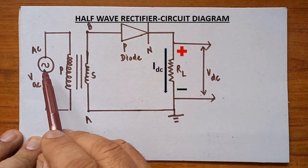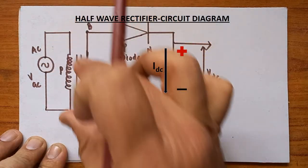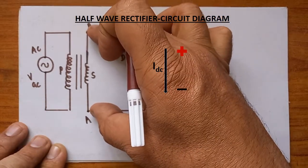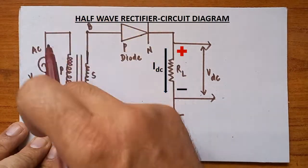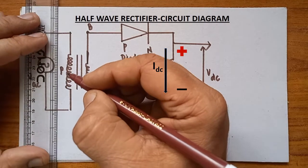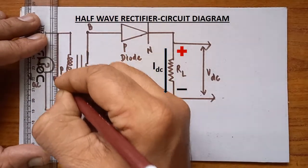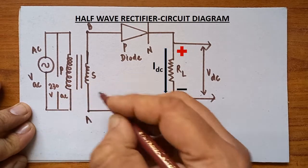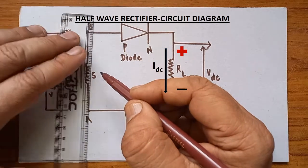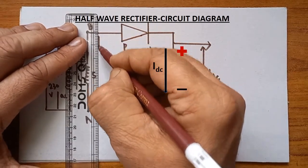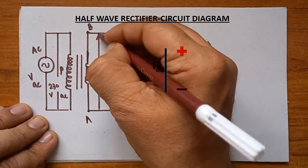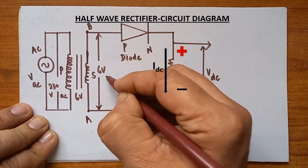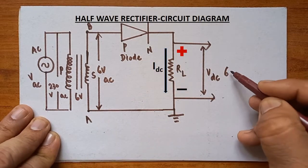Diode plays a vital role. The input voltage may be greater; when it is allowed to pass through the transformer, the voltage will be reduced. Across the two terminals A and B, we will be getting the input in the form of AC. For example, if 230 volt AC is given across the two ends, and if it is a 6 volt step-down transformer, across these two terminals the output will be 6 volt AC. This 6 volt AC will be converted into 6 volt DC.